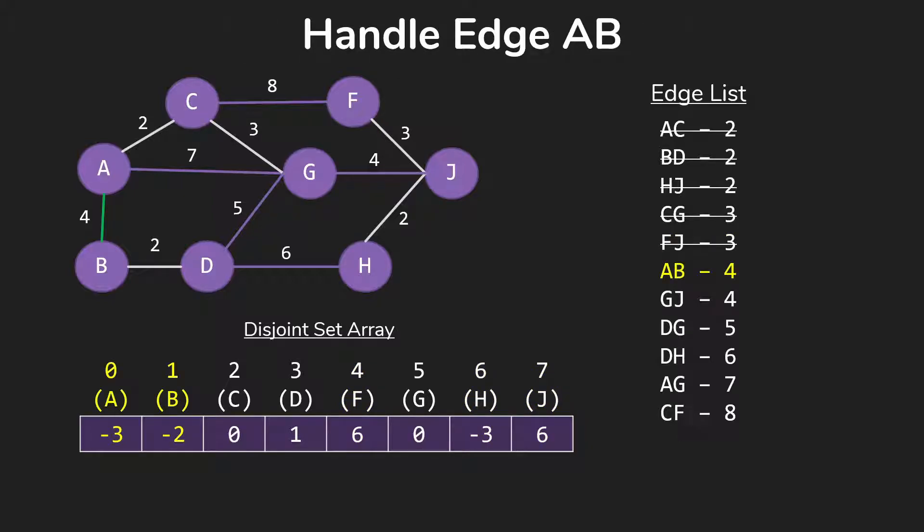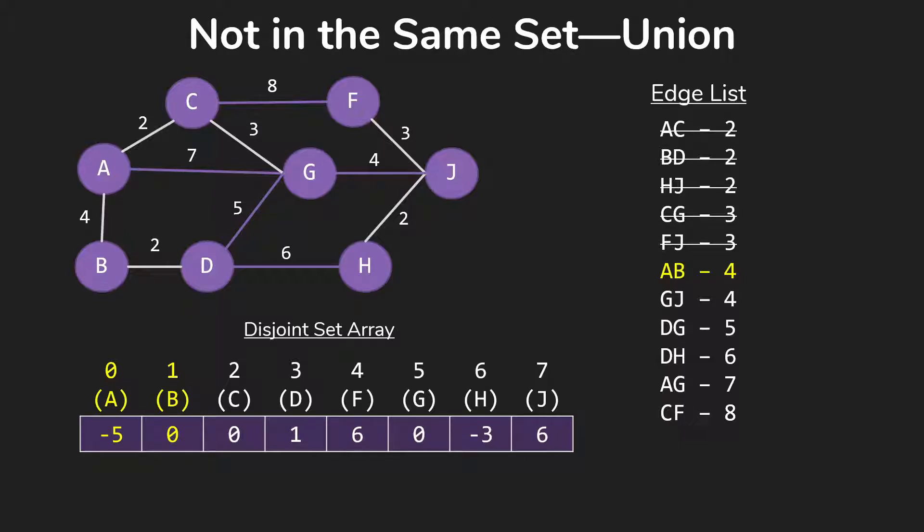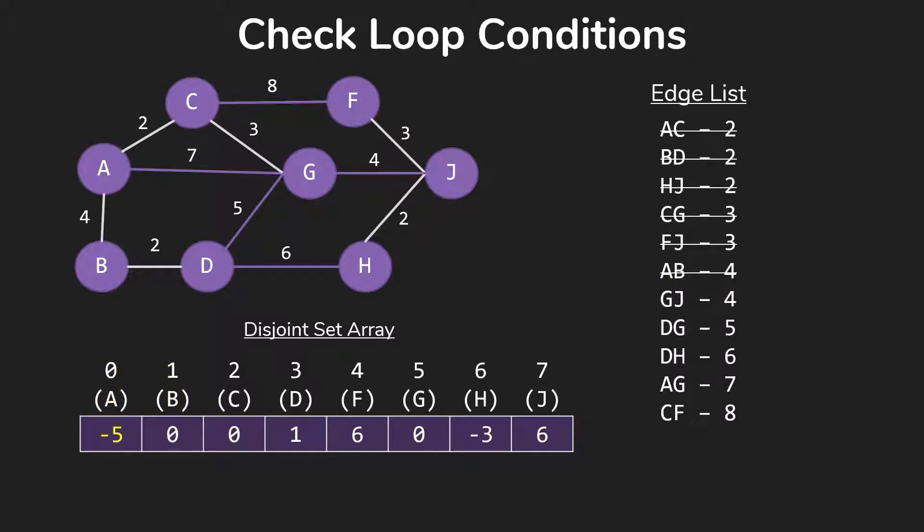so we take AB. Those again are in two different sets. So we're going to add that to our minimum spanning tree and do that union in our disjoint set array. Still not finished,